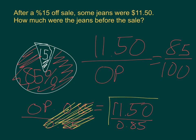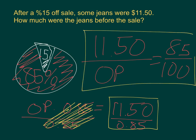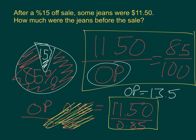Whether I divide $11.50 by 85%, or cross multiply to find my answer, the original price is going to equal $13.53. The hard part about this is remembering that if you have a 15% off sale, you have to find what percent is left.